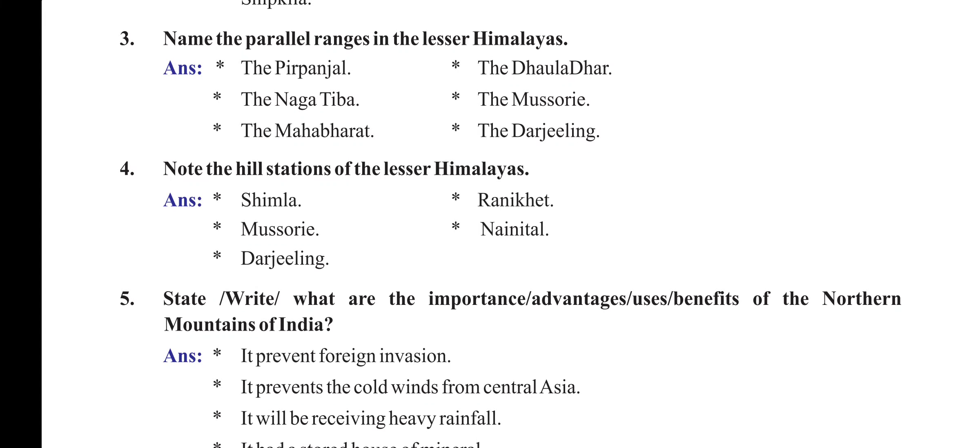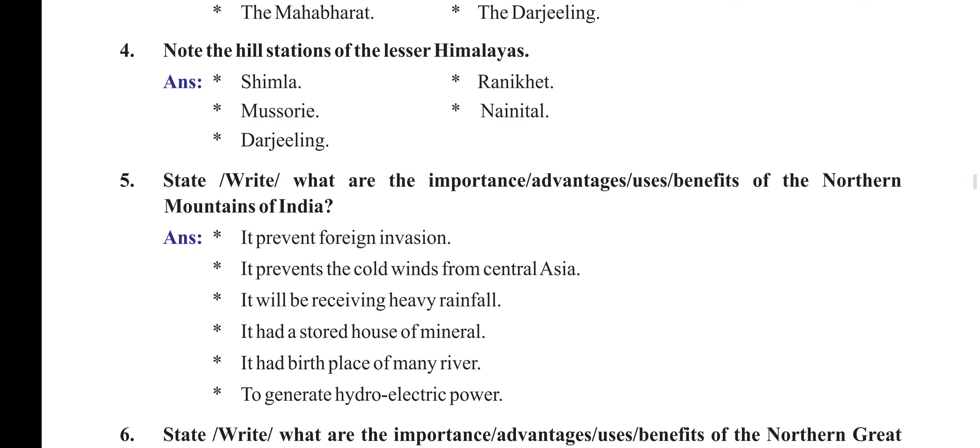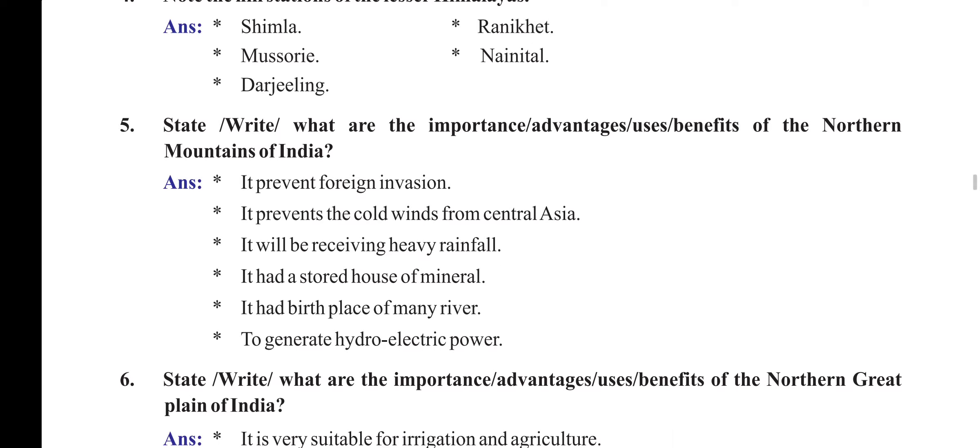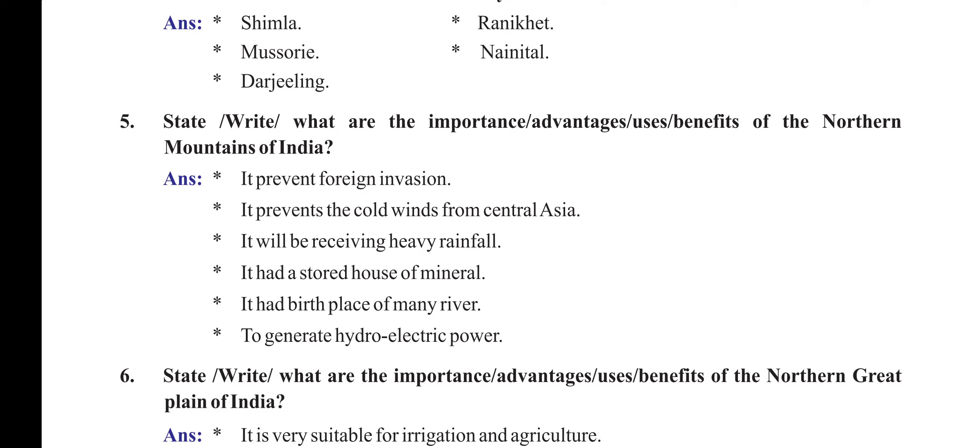Note the hill stations of the lesser Himalayas: Shimla, Mussoorie, Darjeeling, Ranikhet, and Nainital. What are the advantages or uses of the northern mountains of India? They prevent foreign invasion, prevent cold winds from Central Asia, receive heavy rainfall, serve as a storehouse of minerals, and are the birthplace of many rivers that generate hydroelectric power.